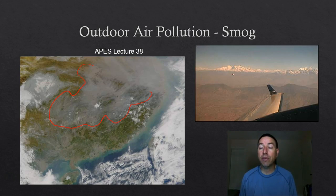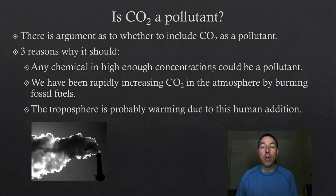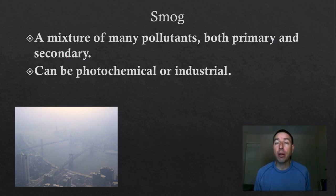You can even see it here — this is a picture of an airplane flying past the Himalaya Mountains. You can see how brown it is down there, all due to pollution put out by those Asian countries. So what is smog? Smog is a mixture of all kinds of different pollutants — particulates, water vapor — and they can be primary or secondary pollutants. There are two types of smog: photochemical smog and industrial smog.